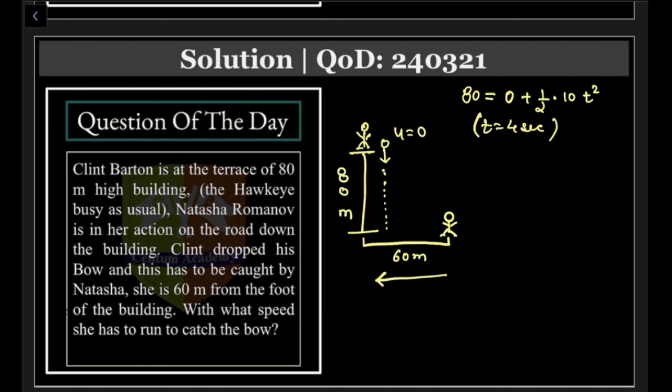When Natasha is running, she has to cover the 60 meters in 4 seconds. Her speed has to be a minimum of 15 meters per second.